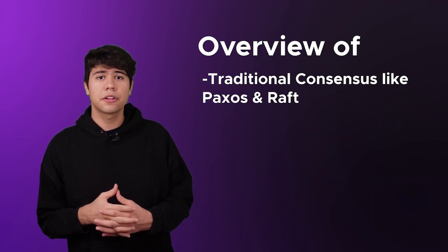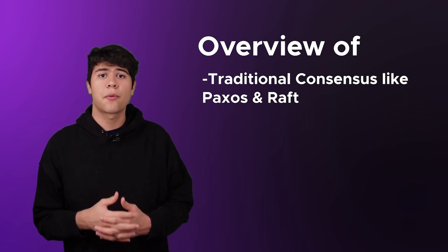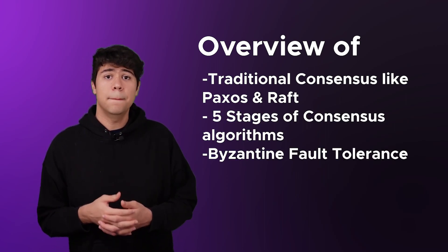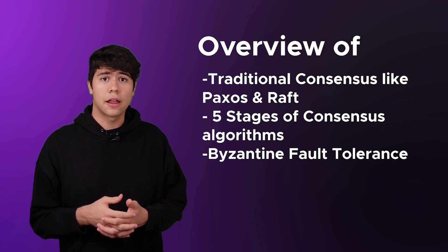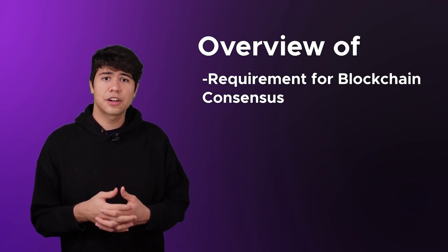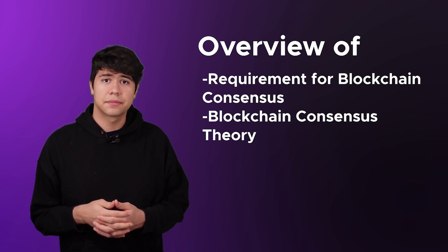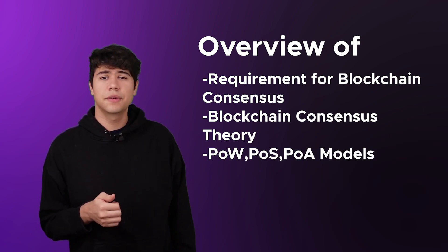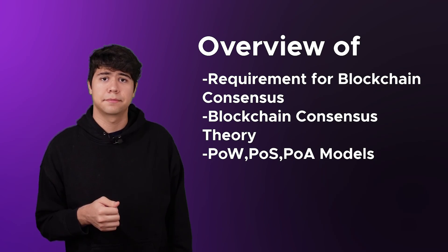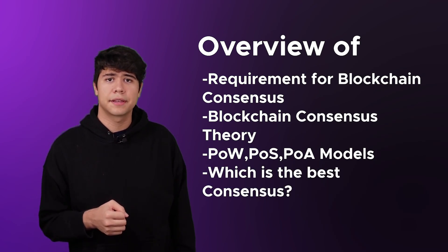In this video, we're going to learn about traditional consensus protocols like Paxos and Raft, explain the five stages of consensus algorithms, Byzantine fault tolerance, Sybil resistance, the requirements that blockchains need for consensus, the theory behind consensus, and then have proof of work, proof of stake, and proof of authority models compared. And finally, which blockchain consensus protocol is the best?